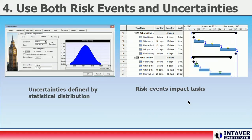Step 4: Use both risk events and uncertainties. While most project managers understand that Monte Carlo simulations measure the impact of risk on plans, the source of this risk is often misunderstood. Risk in projects comes from two sources: risk events and uncertainties. Both types of risks should be added to the risk model to increase the validity of the simulation.